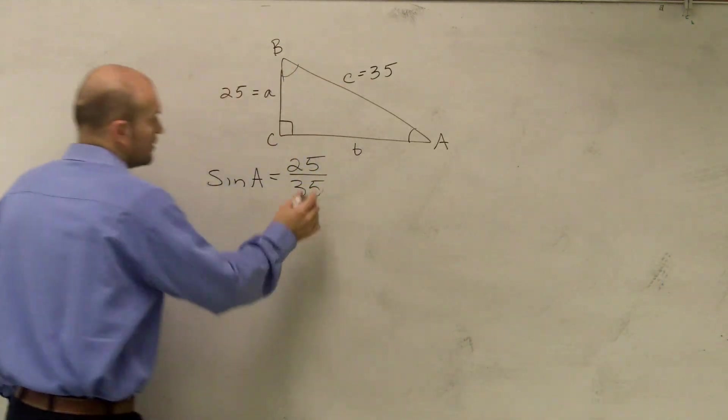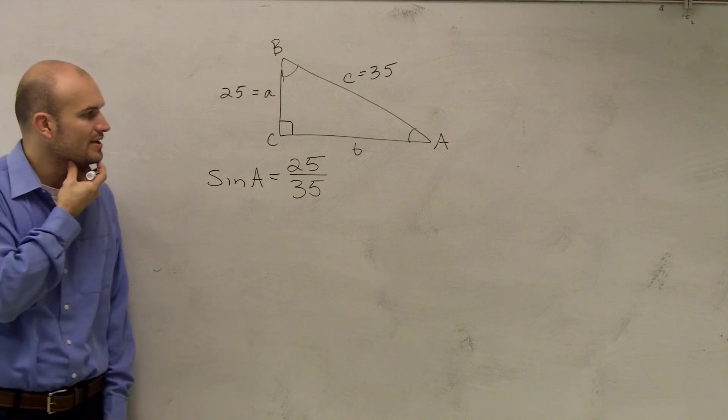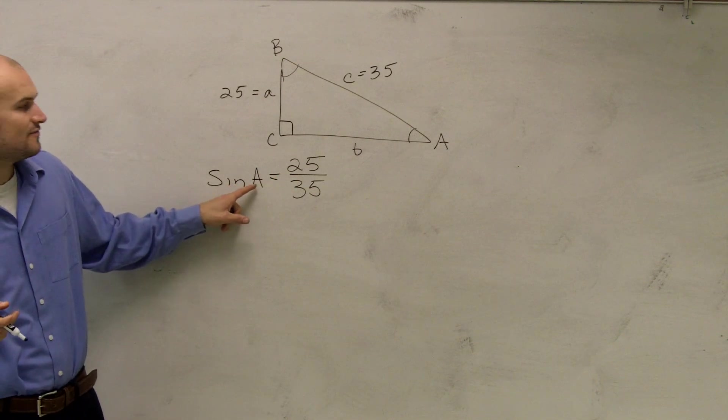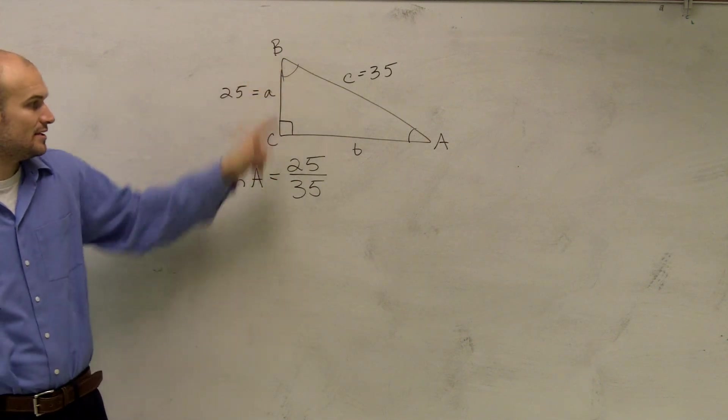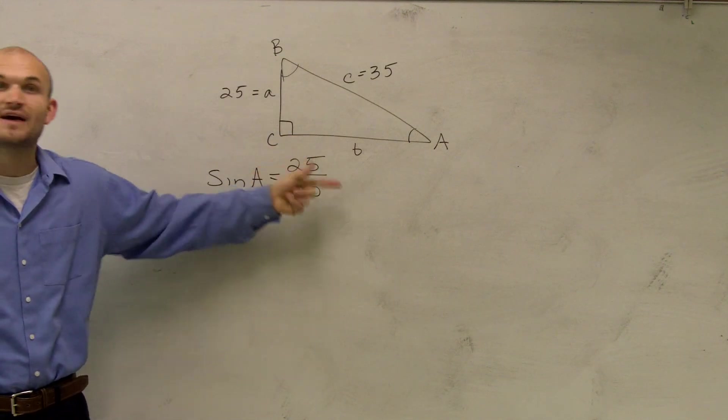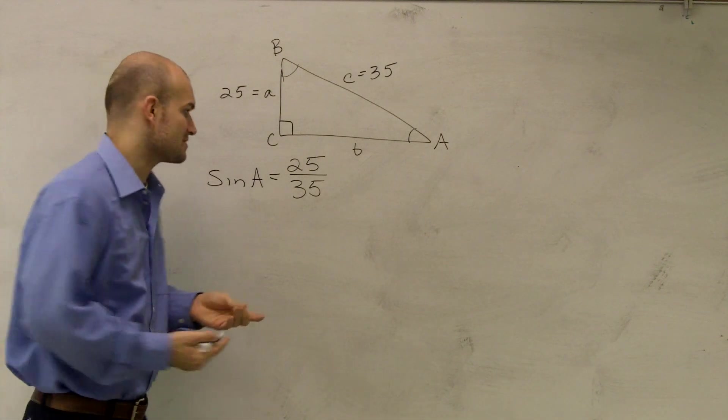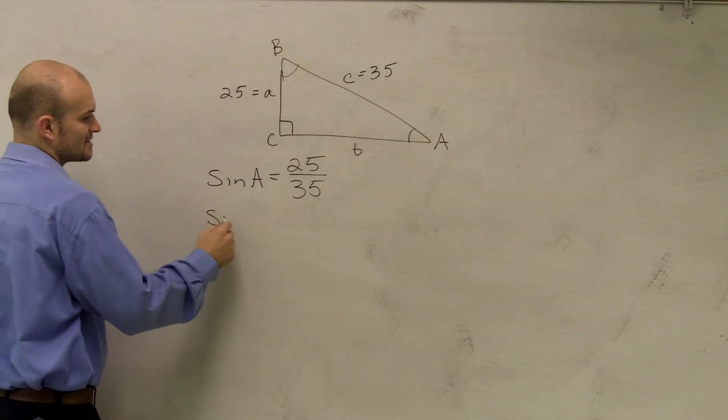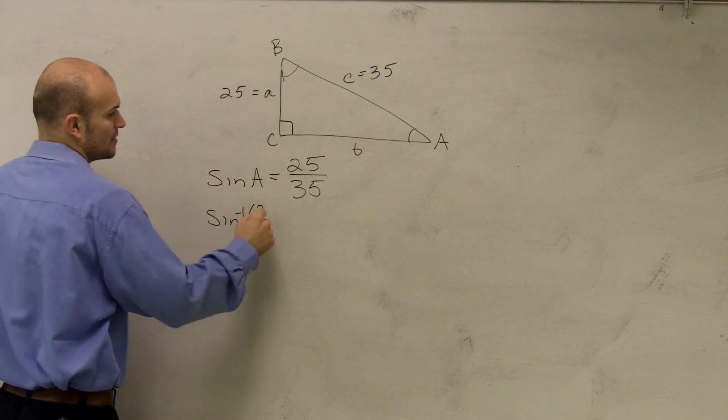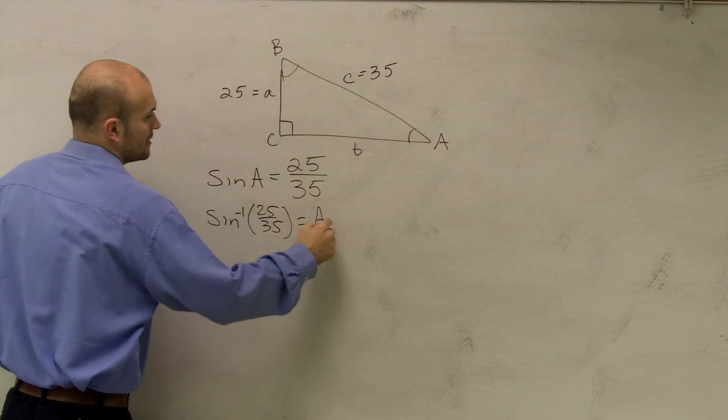Remember when we were talking about inverses, to find your function, remember the sine of an angle equals the ratio of the two side lengths. So if you're giving your two side lengths to find that angle, you're going to have to be working backwards, right? You're going to have to undo it going back to using your inverse. So what I can say is sine inverse of 25 over 35 equals A.